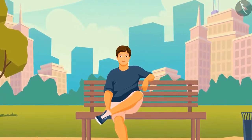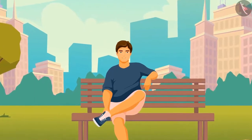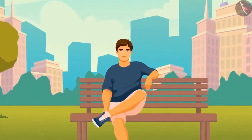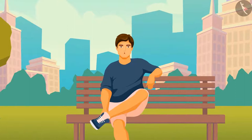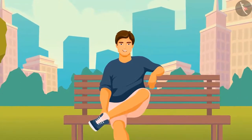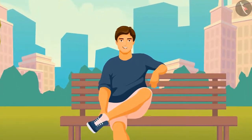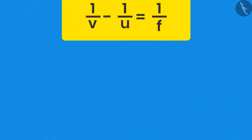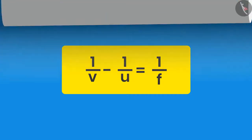If you remember, we have learnt a mirror formula too. Just as the mirror formula shows the relationship between object distance, image distance, and focal length, similarly, the lens formula also shows the relationship between these three parameters. For any lens, the lens formula looks like this, like the mirror formula. The lens formula also has five sign conventions.